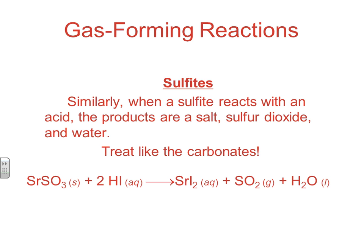Sulfites behave in the same way. H2SO3 is unstable and breaks apart into SO2 gas and H2O. So think of carbonates, hydrogen carbonates, and sulfites as all doing the same thing — it's just that instead of getting CO2 and H2O plus the salt, you get SO2 and H2O plus the salt. Sulfites clump together with the carbonates and hydrogen carbonates as a group that all produce a gas and water.